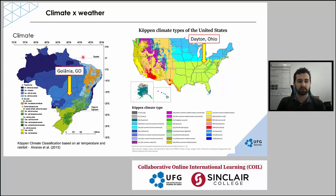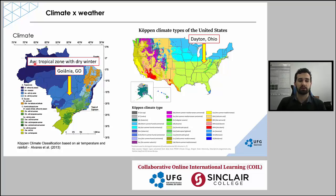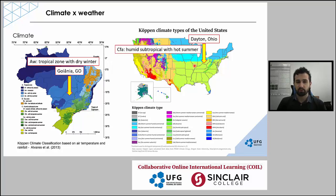If we look at our city — here we have Goiânia, where we live and where our university is located — and compare it with Dayton, Ohio, we can see that we have different conditions. Here in Goiânia, we have climate type AW, a tropical zone with a dry winter: warmer in summer with rainfall, but no rainfall in winter — a dry condition during that period. In Dayton, we have CFA, a humid subtropical climate with hot summer, based on both air temperature and rainfall distribution throughout the year.